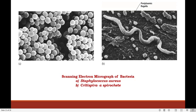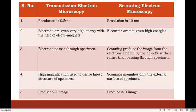Here are figures taken by scanning electron microscope of a few bacteria. Figure A shows Staphylococcus aureus while figure B shows Cristispira or Spirochete. Now, as we have studied both transmission electron microscope and scanning electron microscope, you can easily differentiate between both of them. Let's look at the differences between TEM and SEM.